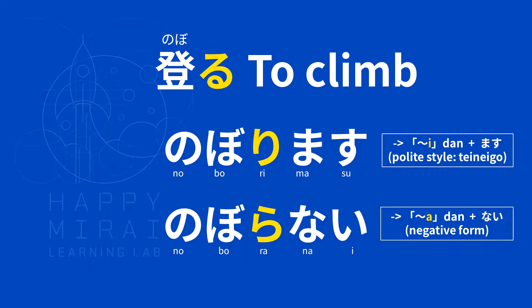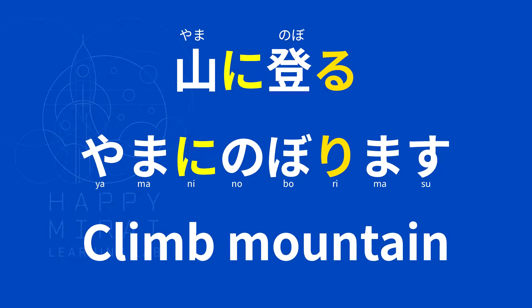Next verb: 登る (noboru) — to climb. 登ります (noborimasu). 登らない (noboranai). Example: 山に登る (yama ni noboru) — 山に登ります (yama ni noborimasu) — climb a mountain.